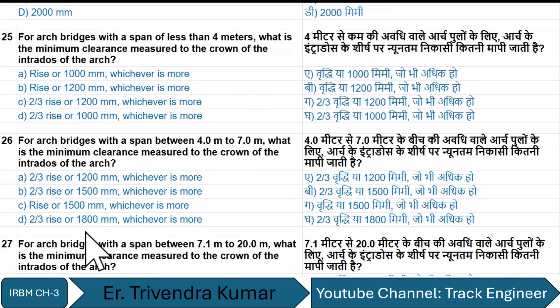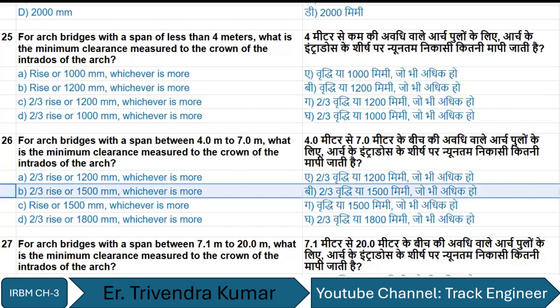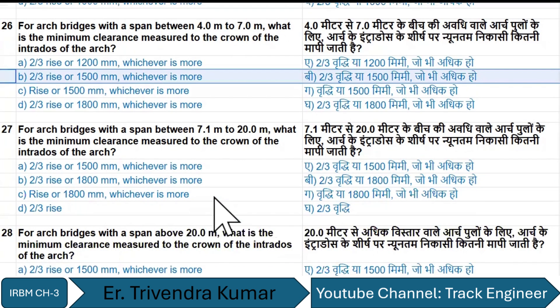For arc bridges with a span less than 4 meters, the minimum clearance measured to the crown of the intrados of the arch is rise or 1,200 millimeters, whichever is more. For a span between 4 to 7 meters, it is two-thirds rise or 1,500 millimeters, whichever is more. For a span between 7.1 to 20 meters, it is two-thirds rise or 1,800 millimeters, whichever is more.